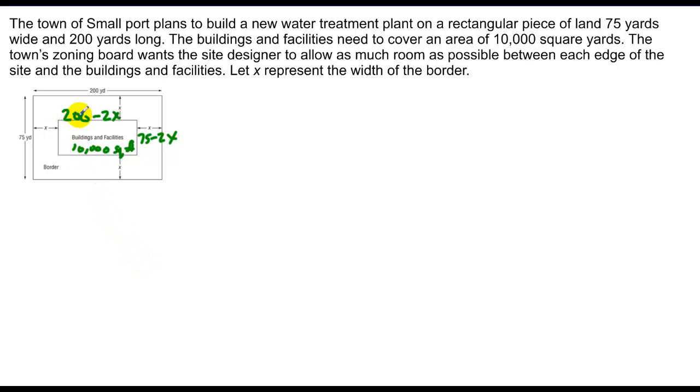Now what I can say is, I have the dimensions of this rectangle in terms of x and I know what the rectangle's area is. So I can write an area equation stating 200 minus 2x multiplied by 75 minus 2x, and that's equal to 10,000. If I solve this, I get my value for x and the value of this bordered region.